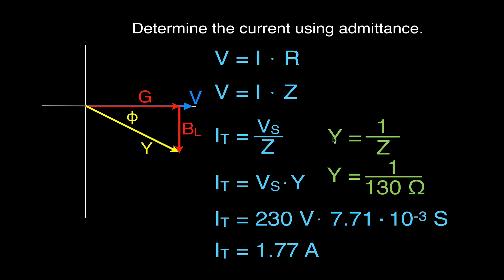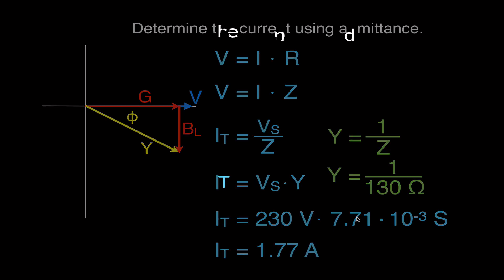One last thing — you can always calculate the admittance directly as 1 over the impedance. The impedance was 130 ohms, so 1 over 130 gives you the same admittance value. It should all fit together very nicely like a nice little puzzle. Thank you so much for watching. Hope you found the video helpful. Please subscribe to my channel, give me a thumbs up, leave a comment, and share this video with all your friends. Check out the next video where we'll do an example problem for RLC parallel circuits.